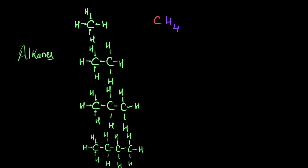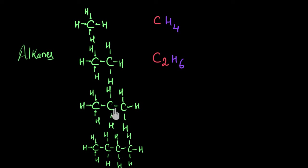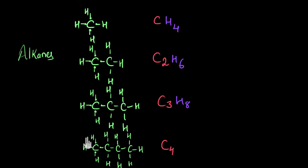Similarly, the two-carbon compound has two carbons and six hydrogen atoms, so C₂H₆. Can you pause the video and try to find out the molecular formula of the next two molecules? The three-carbon compound has three carbons and eight hydrogen atoms: C₃H₈. The four-carbon compound has four carbons and ten hydrogen atoms: C₄H₁₀.